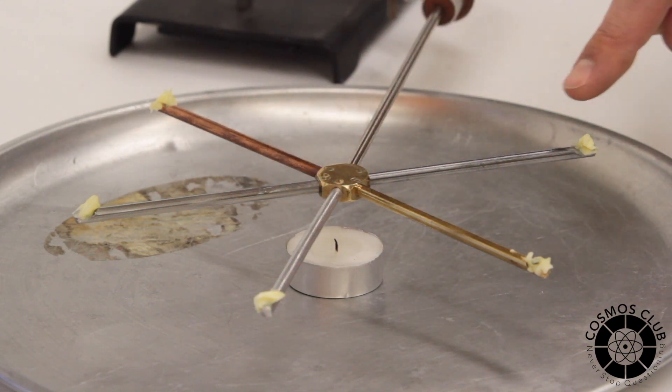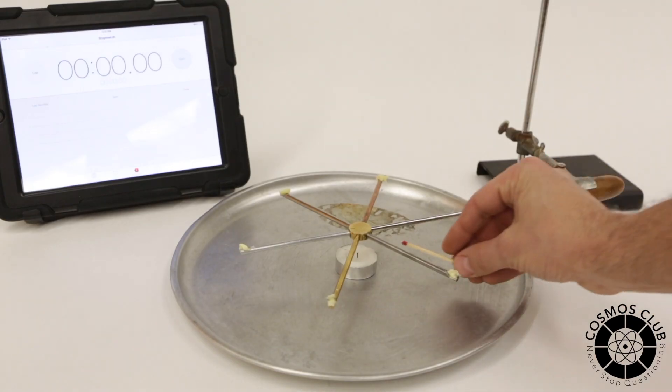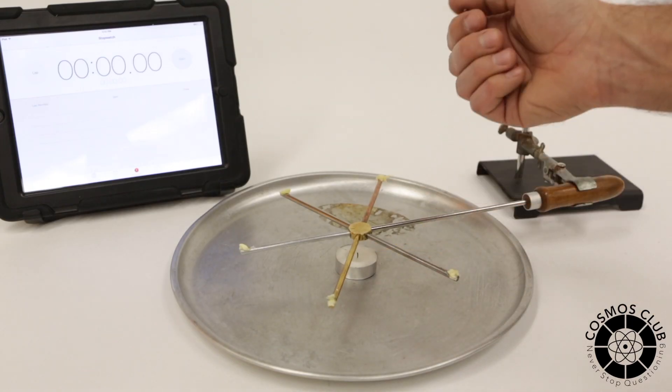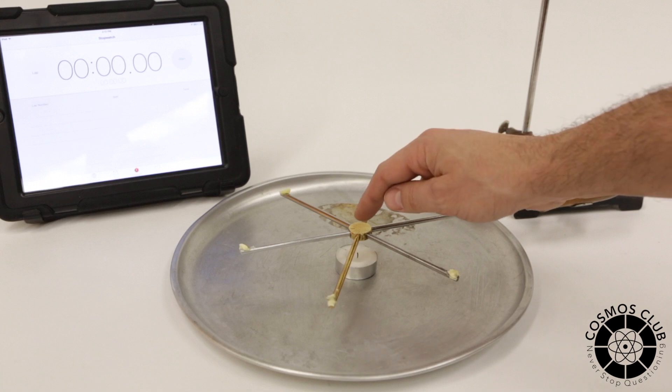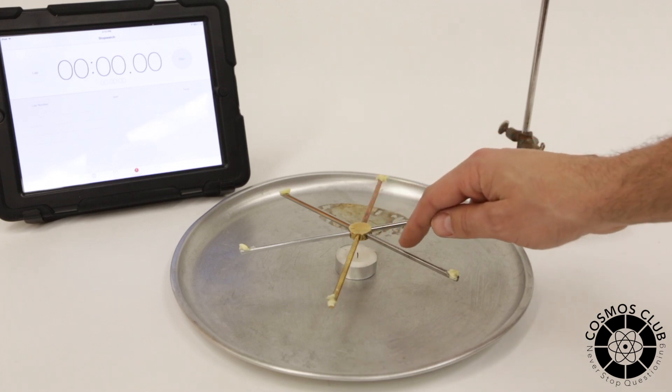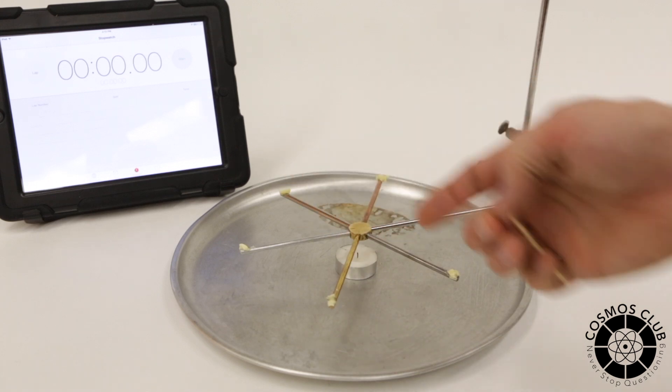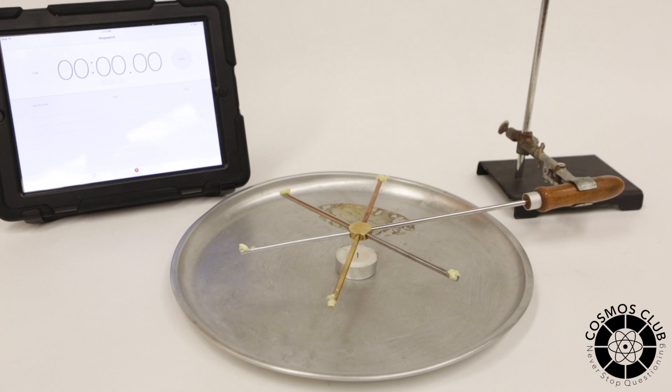At the end of each one is just a little pat of butter. We're going to light the candle underneath here. The heat through radiation and convection will rise, hit the center, and conduct out through each spoke. So we can see which type of metal will conduct heat the best.